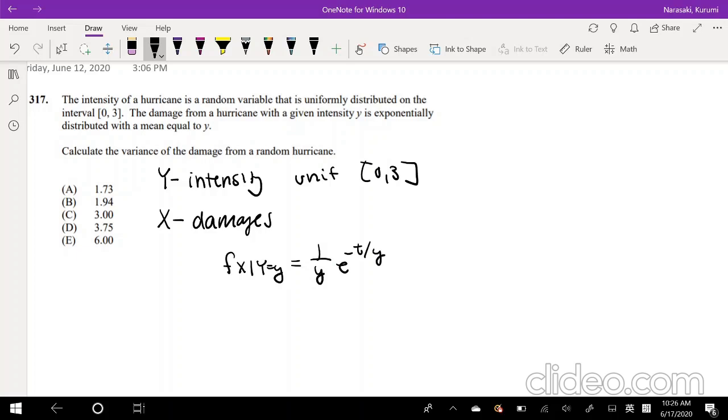Calculate the variance of the damages. So that's saying, calculate the variance of x. Well, this is a perfect time to use our double expectation formula because one of the variables, the one we're trying to find, is dependent on the other variable. For double variance, the formula is expectation of variance of x given y, plus the variance of expectation of x given y.